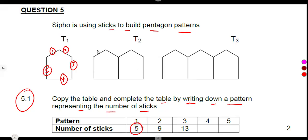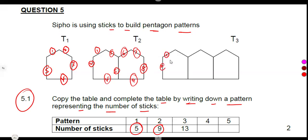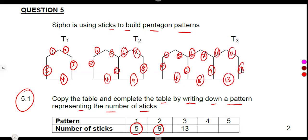For pattern two, we count: one, two, three, four, five, six, seven, eight, nine sticks. For pattern three, counting all sticks gives us one through thirteen. There are thirteen sticks in pattern three.